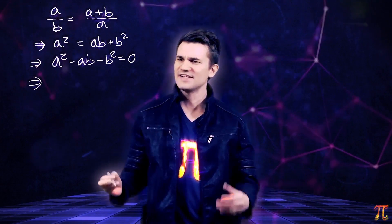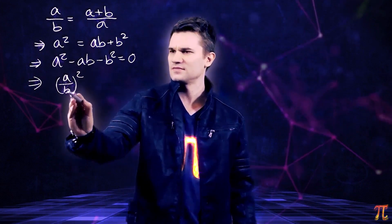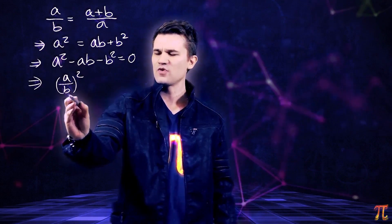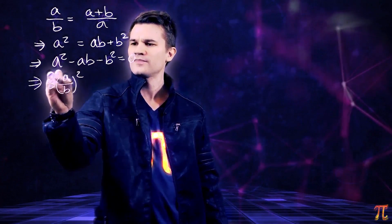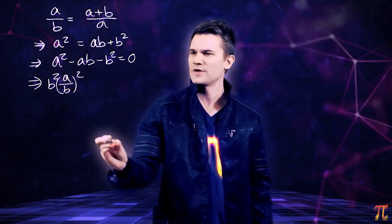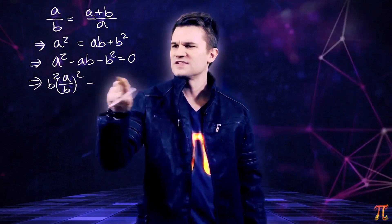So instead of a squared, let's write a over b squared times something to account for that. So we had a squared before, now we have a squared over b squared, so we need to multiply by b squared. And then these are the same, right? And then we will do the same thing for the second term, a over b.